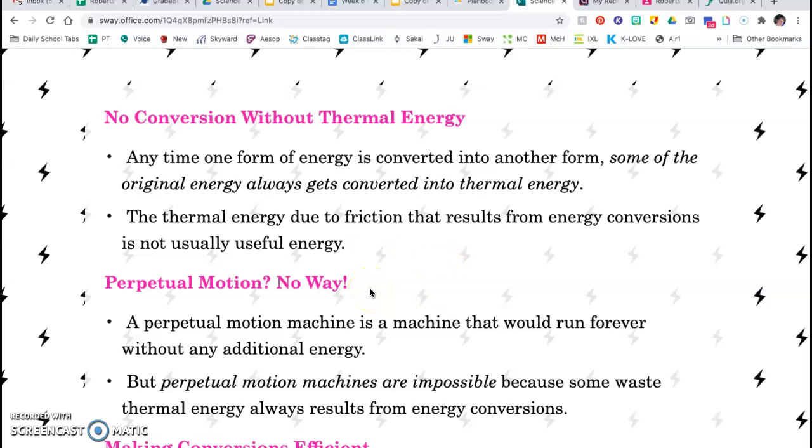Let's think about perpetual motion here for a second. A lot of people have tried to invent perpetual motion machines - a machine that would run forever without adding any energy to it. But what did we just learn? Is that possible? No. Perpetual motion machines are impossible because some waste thermal energy always results from energy conversions.